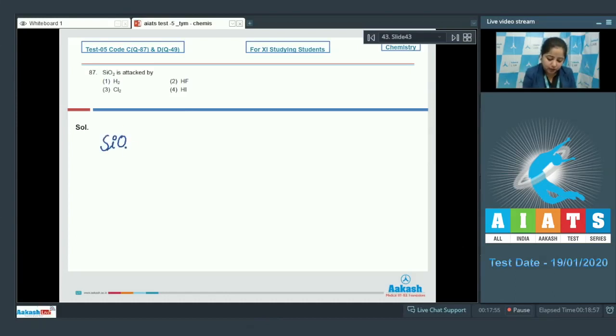So SiO2 plus HF gives SiF4 plus 2H2O. That means silica is attacked by option number 2, that is HF.